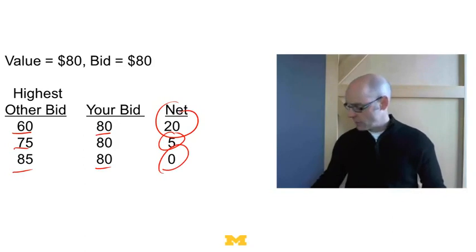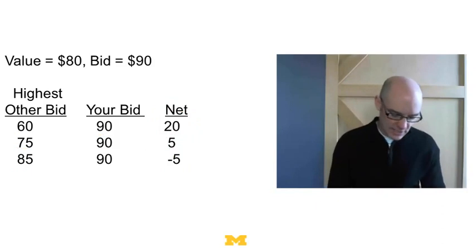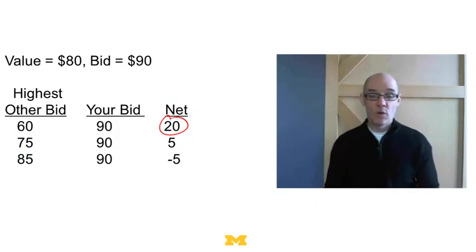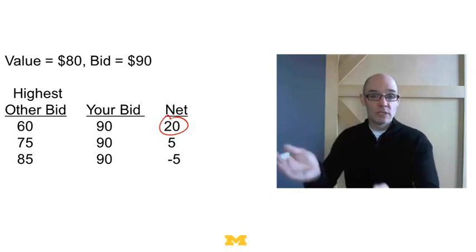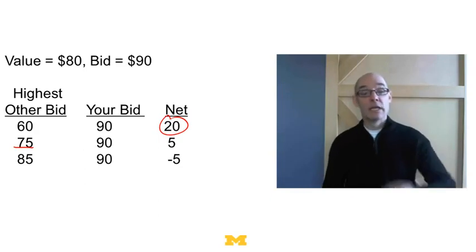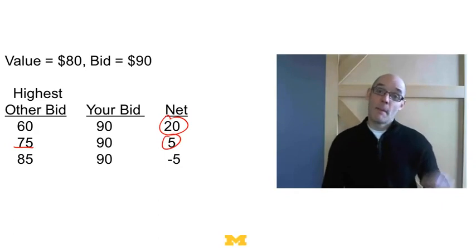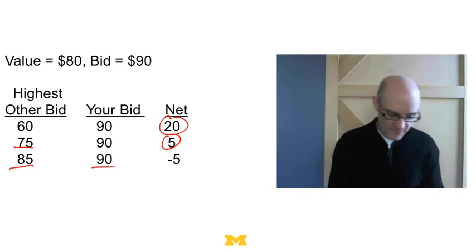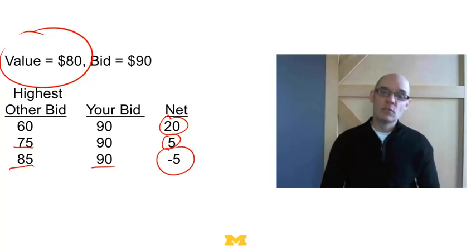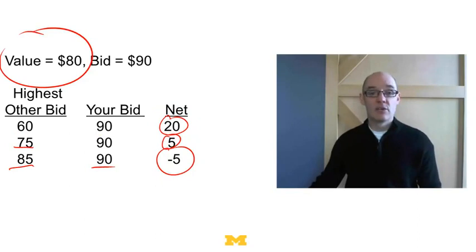Suppose you think maybe you should bid a little more — say 90. If the highest other bid is 60, you get it for 60 and your net is 20, same as before. If the highest other bid is 75, you get it for 75 and your net is still 5. But if the highest other bid is 85 and you bid 90, you'd pay 85, but you only value it at 80, so you lose 5. You're worse off than before. So it's fairly clear in a second price auction you don't want to overbid.